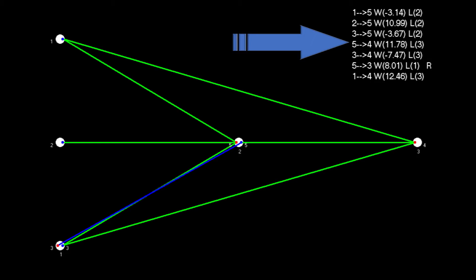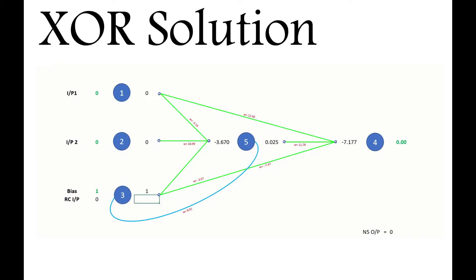It yielded this solution, and I grabbed the connections and weights from here. The connection 1-5, for example, has a weight of minus 3.14, and connection 5-3 is recurrent. When I bring it into Excel, it looks like this.